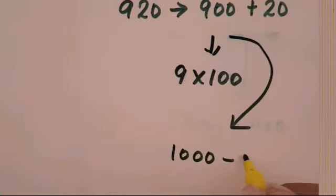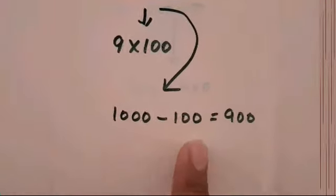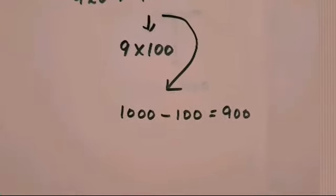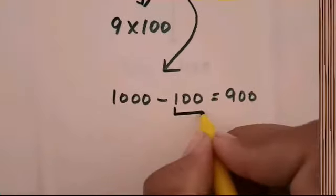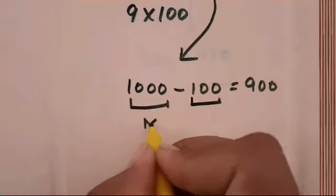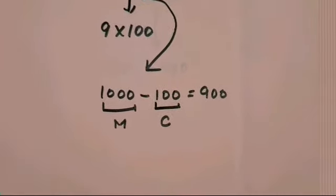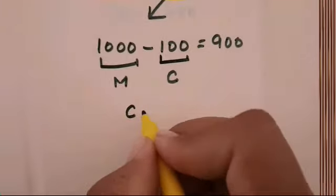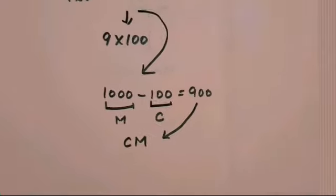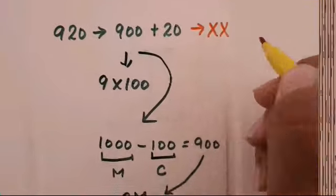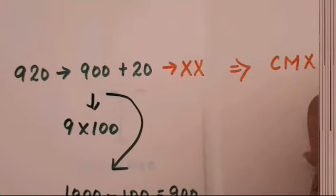In the subtraction representation, 1000 is represented by M and 100 is represented by C. Since these are in subtraction form, we write the smaller one first and then the larger one — so we write CM. The representation of 900 is CM, and 20 is XX, so the overall representation of 920 is CMXX.